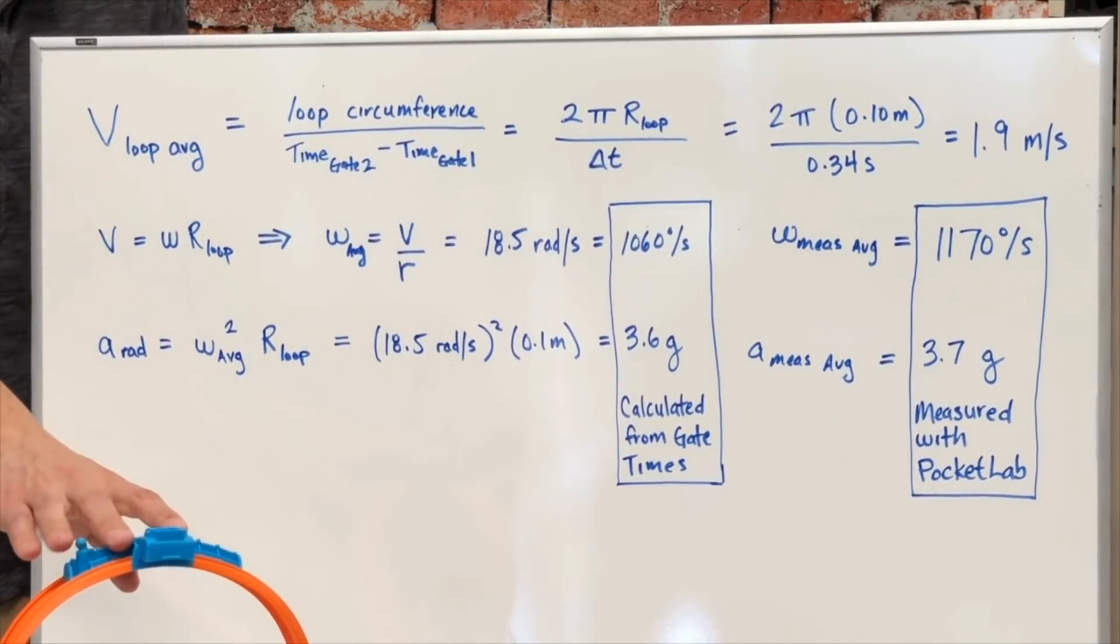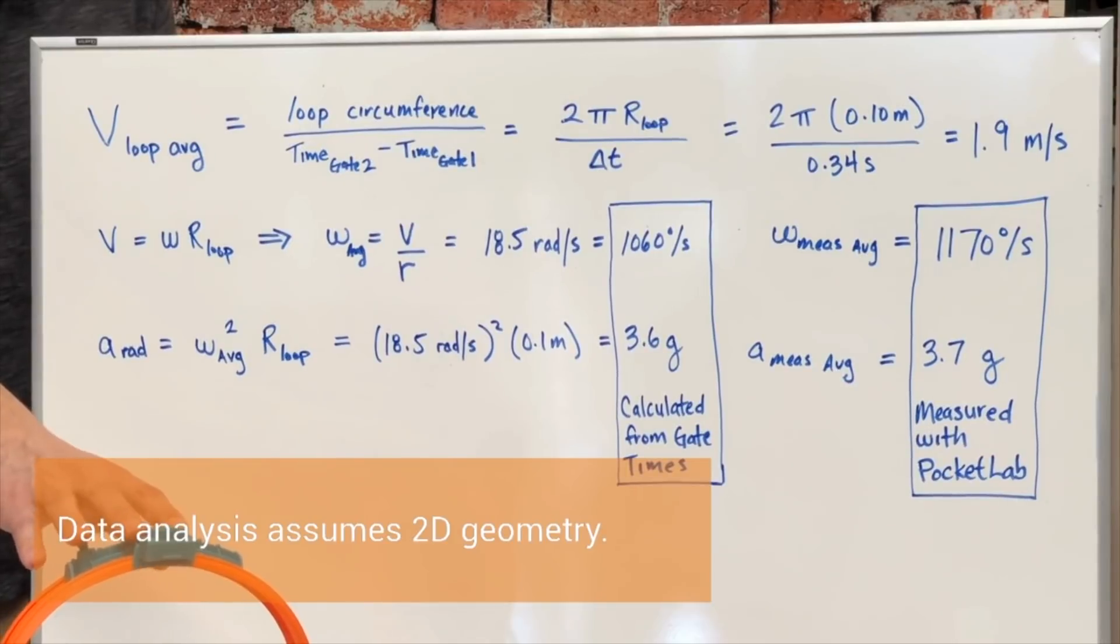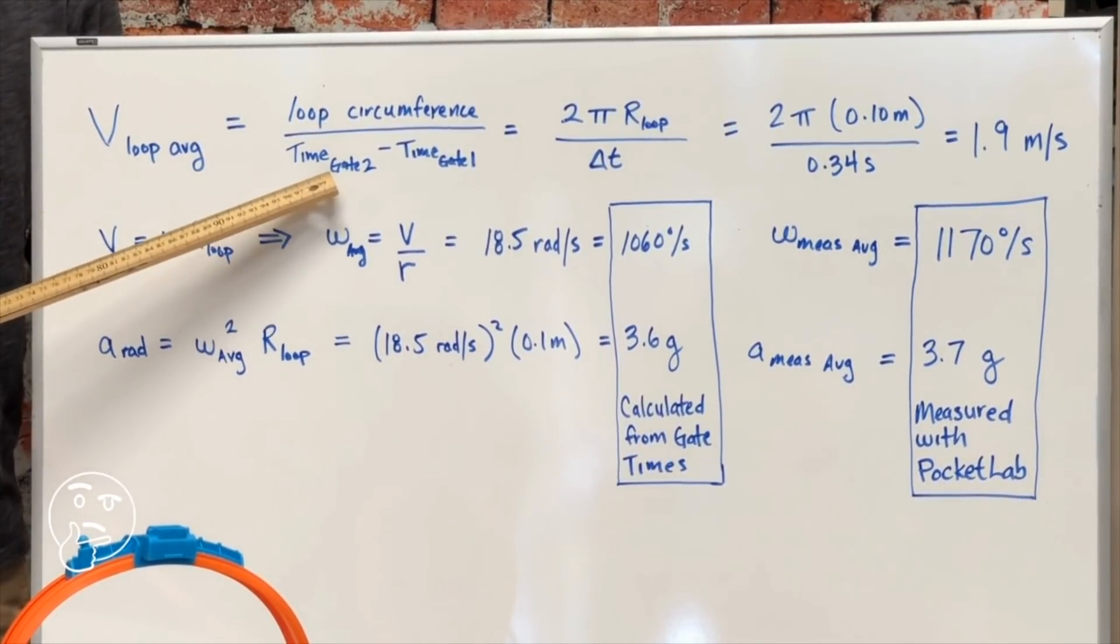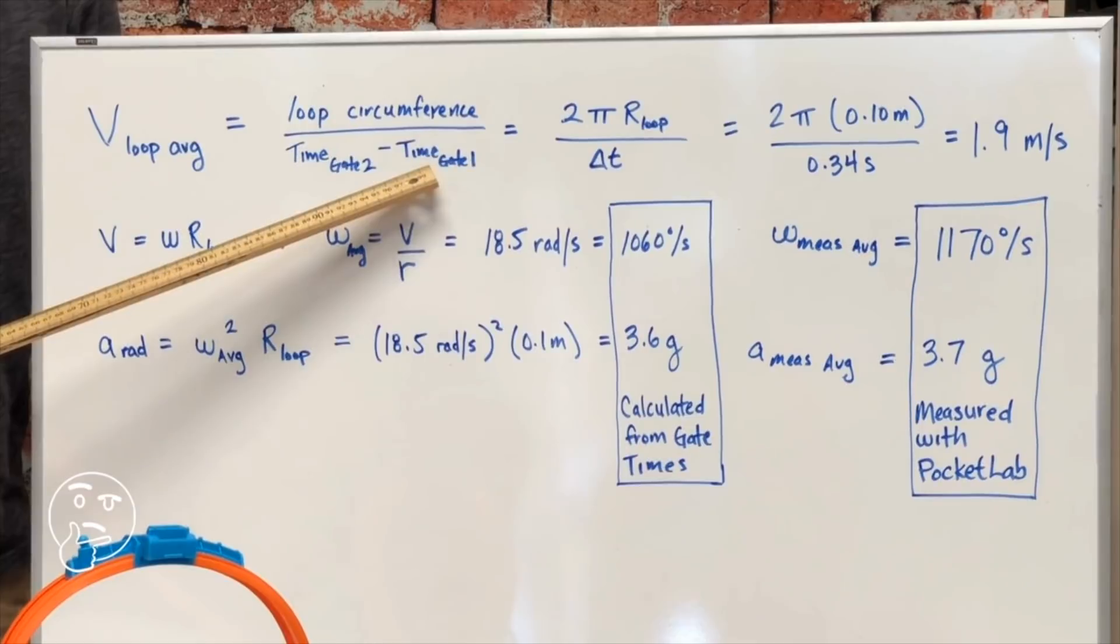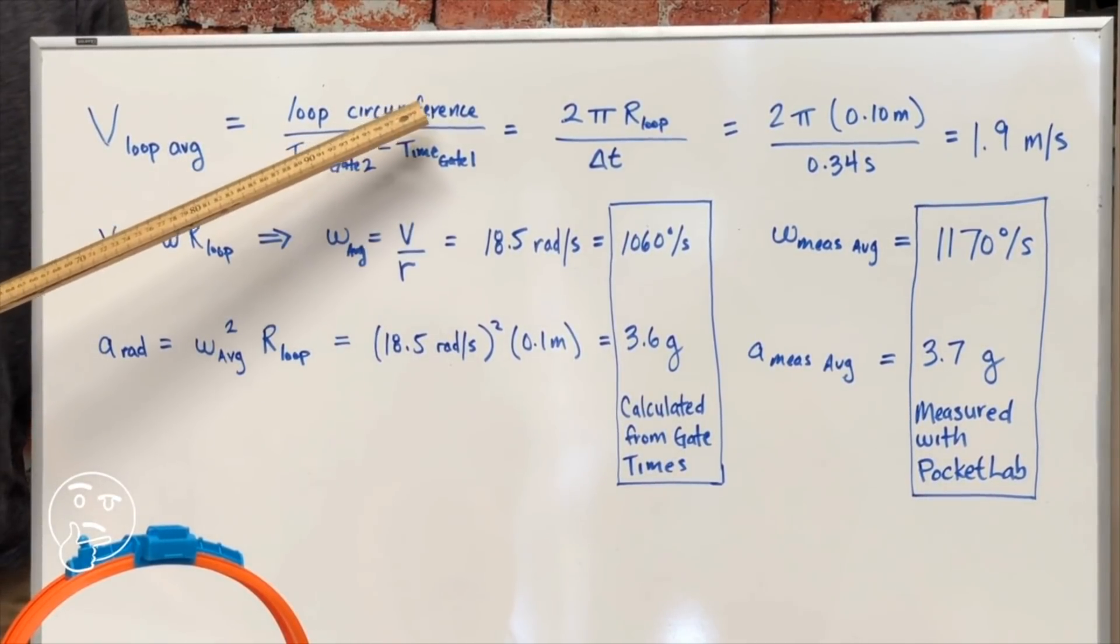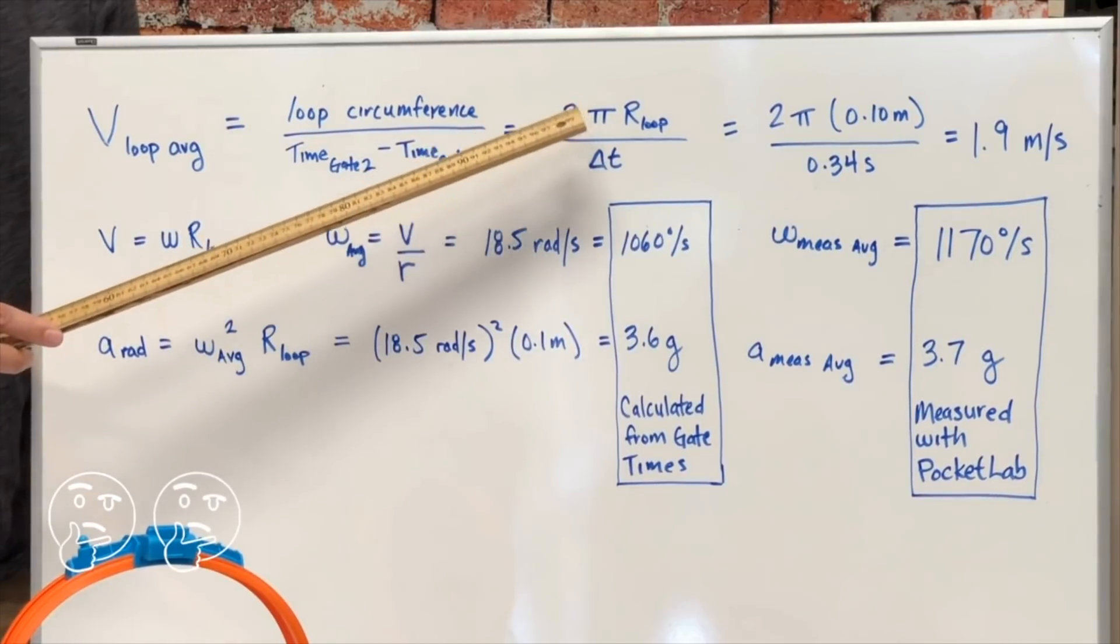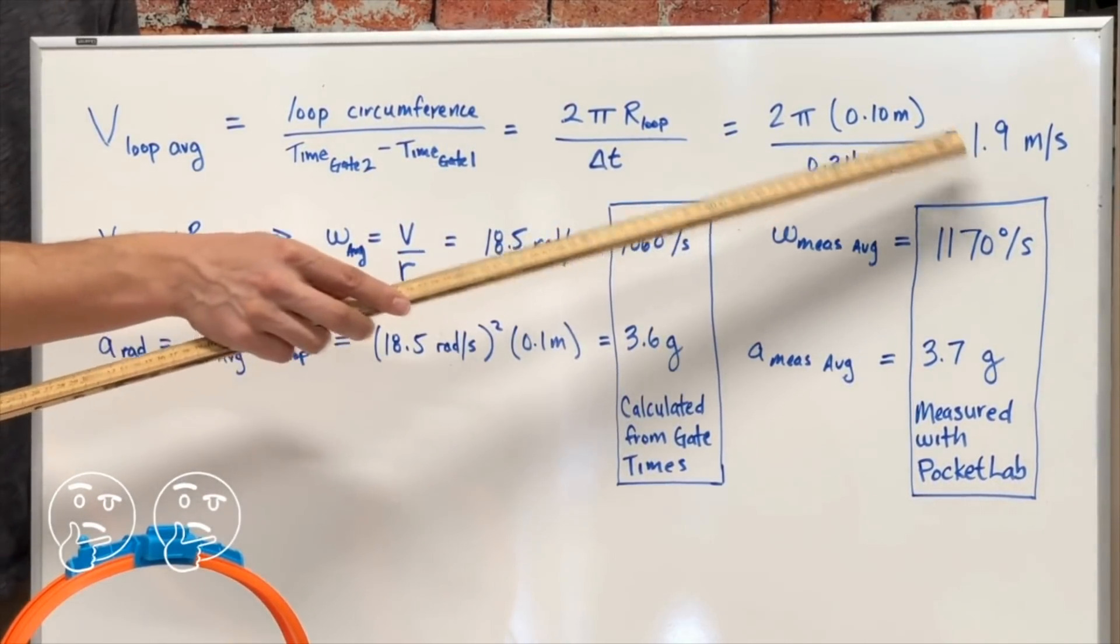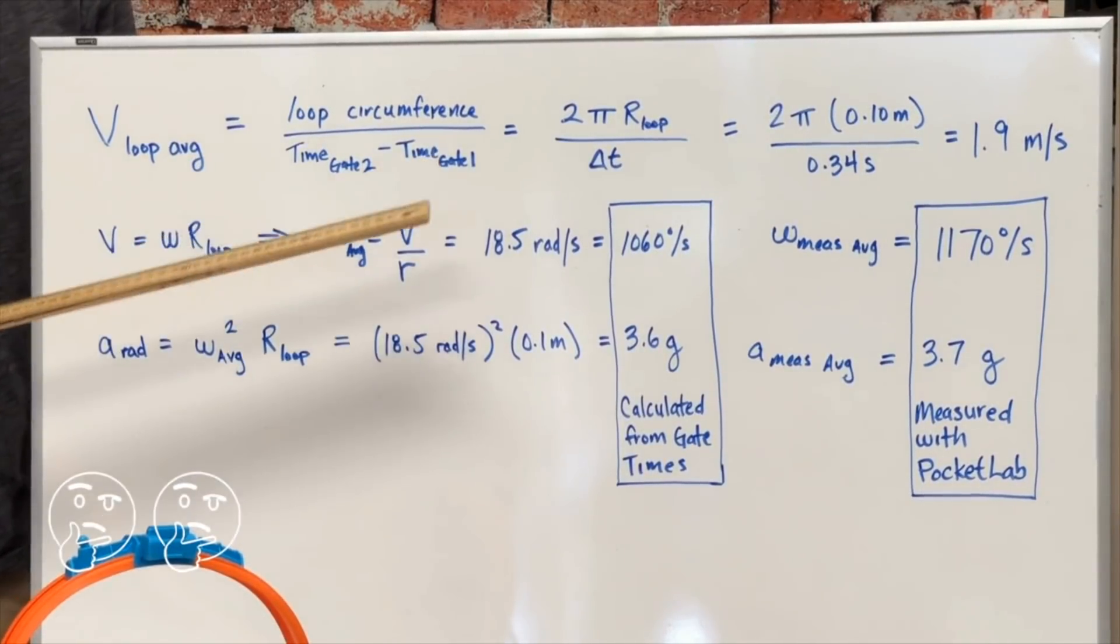Now it's time to do the data analysis. We want to look at the angular velocity inside the loop and the g-forces that are felt. We can do this in a couple of ways. We can calculate the average loop velocity using our timing gates, the time that we exit the loop minus the time that we enter the loop, and using the circumference of our track. Plugging in the geometry and our time, we get 1.9 meters per second as our average velocity.